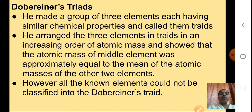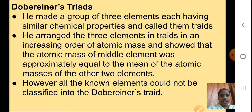He arranged the three elements in triads in an increasing order of their atomic mass, and showed that the atomic mass of the middle element was approximately equal to the mean of the atomic masses of the other two elements. So in the triad, he showed that the atomic mass of the second element was approximately equal to the mean of the first and third.